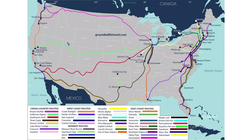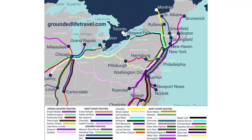Some routes overlap: the Texas Eagle and the Sunset Limited both run from Los Angeles, splitting off in the middle of Texas. In the northeast, multiple trains run between Philadelphia and DC, so they'll all get you there — it's just a matter of which has the best time, the best price, or an available room. You really have a ton of options.